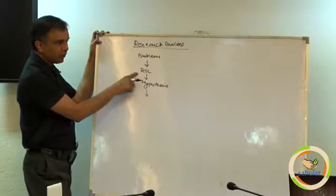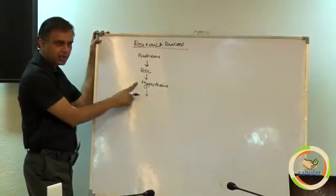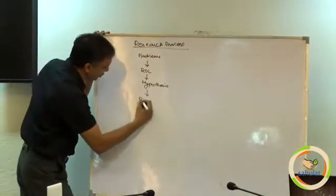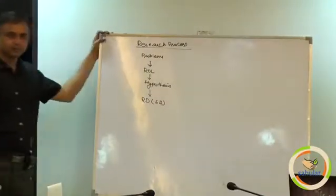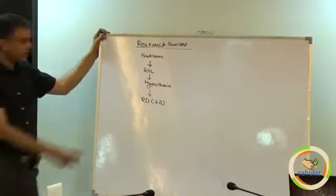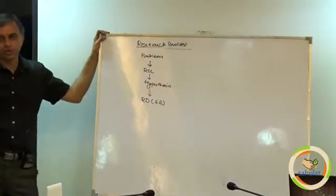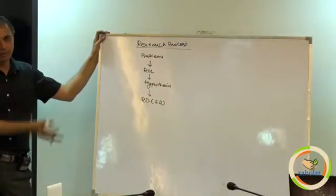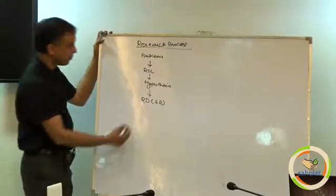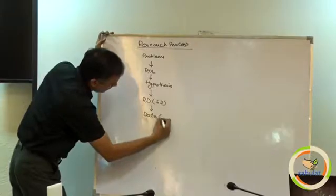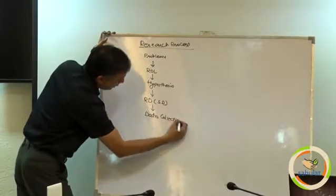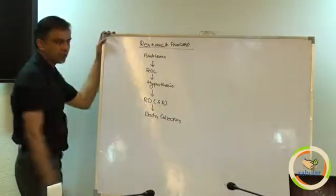So we start with the problem, we go for review of literature, we make a hypothesis, after making hypothesis we go for RD research design including sample design. Research design is simply all questions, answering the questions like we have been talking about the questions so long. After that we go for data collection, it may be RD stands for research design, SD for the sample design.